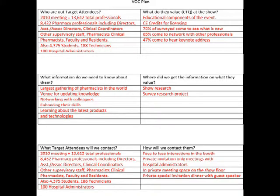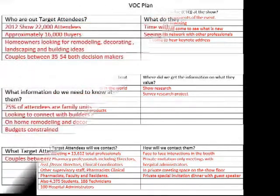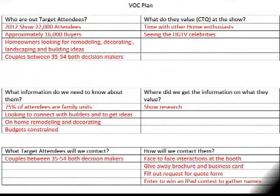As you can see by the examples here, the VOC Plan is really a question map, but it's very focused on hearing the voice of the customer and understanding their needs, wants, desires, expectations, and aspirations. This will help to define the target attendee segments, identify sources of information regarding their wants, needs, and likes, and specify what critical-to-quality characteristics the exhibit and offering need to reveal in order to satisfy the needs of the target attendees.